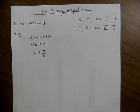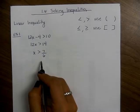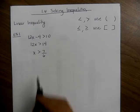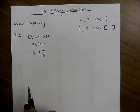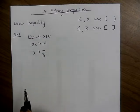Any time you write your answer in interval notation, you always have the smallest number on the left side and the largest number on the right side. The book is going to tell you to graph number lines for your solutions — you don't have to. You can just write your answers in interval notation now.